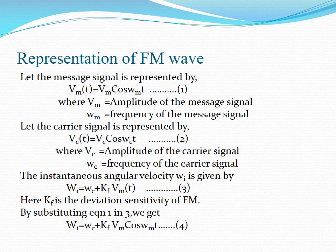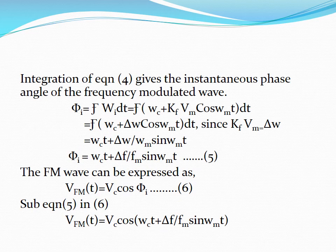Next, we are going to integrate equation number 4, which gives the instantaneous phase angle of the frequency modulated wave, and it is represented by φi. Therefore, φi = ∫ωi·dt. By substituting the value of ωi, which is ωc + kf·Vm·cos(ωm·t), and integrating this equation, we get φi = ωc·t + (Δf/fm)·sin(ωm·t).